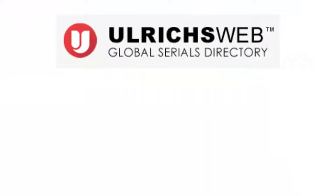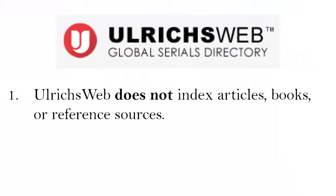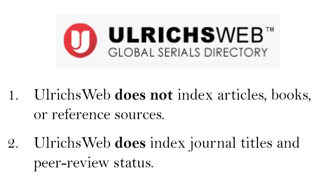Ulrichsweb is a library database that does not index journal articles. Instead, Ulrichsweb is a database that just gives you information about journals, such as the publisher, when the journal started, if the journal is in English or another language, and more. Ulrichsweb will also indicate whether or not a journal is peer-reviewed.